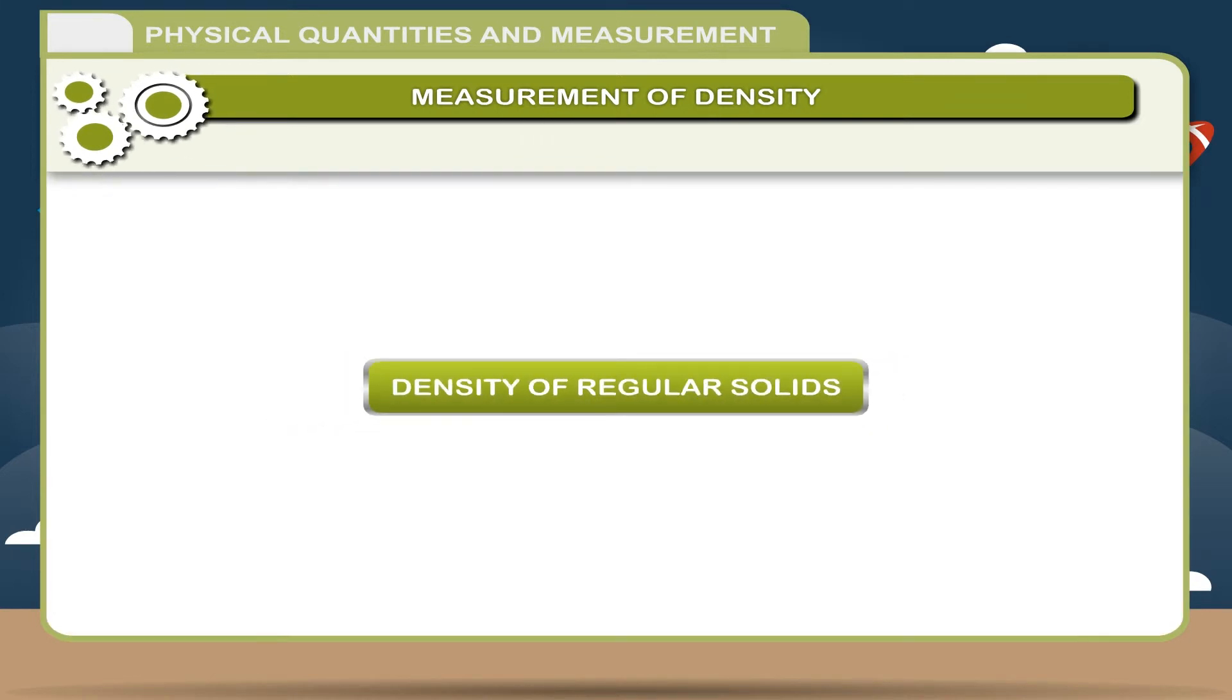Take four blocks of different materials having the same volume. Weigh them and compare their masses. Find out the densities of each using ρ = m/v and list them in increasing and decreasing order of their densities. Also find out which material is more dense.